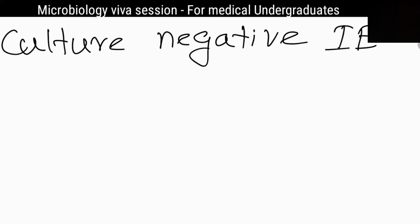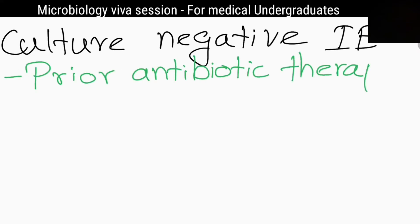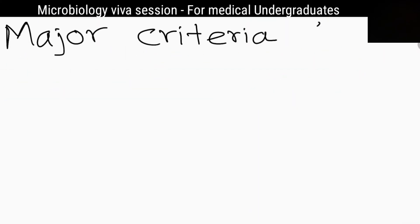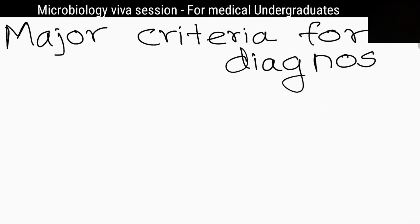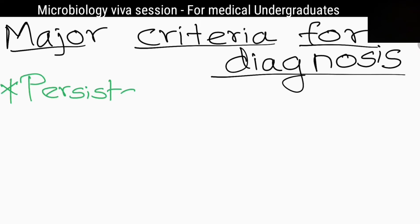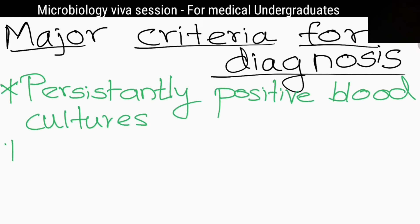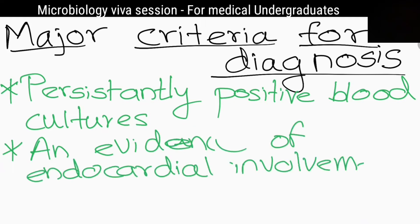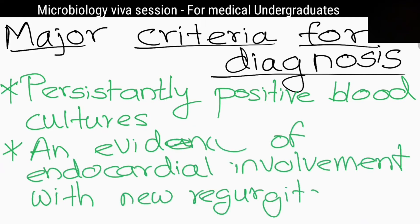What are the causes of culture-negative infective endocarditis? Prior antibiotic therapy and HACEK group of organisms. What are the two major criteria for diagnosis of infective endocarditis? Persistently positive blood cultures, and evidence of endocardial involvement with a new regurgitant murmur.